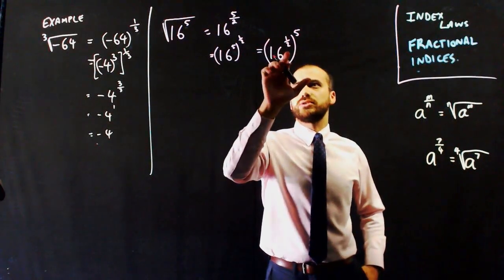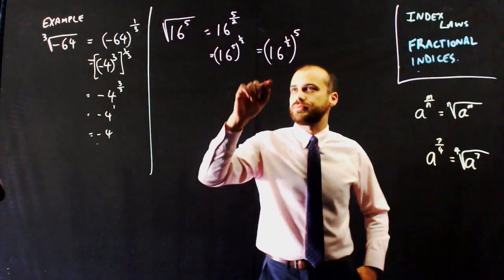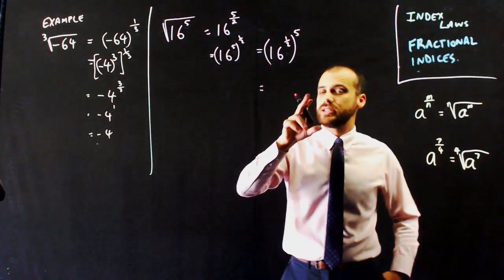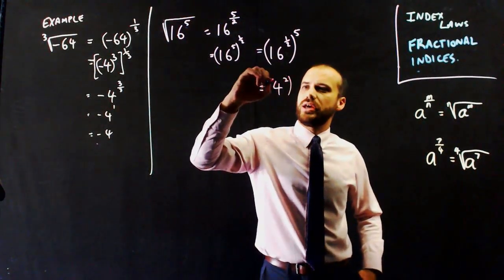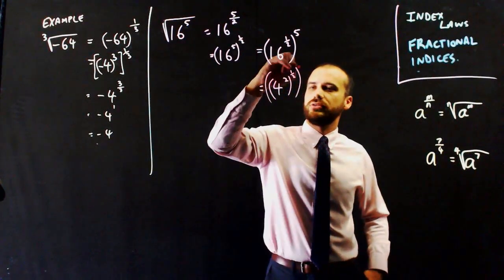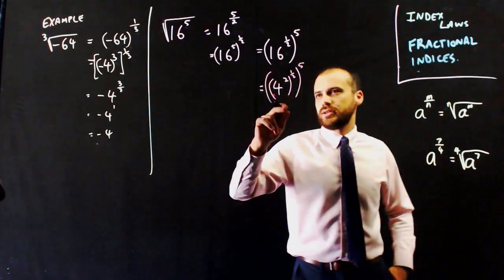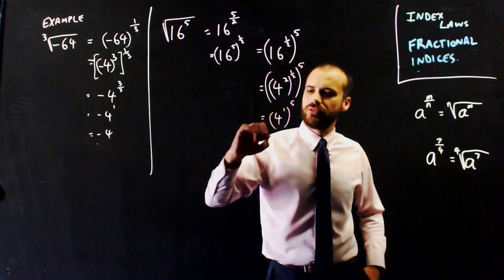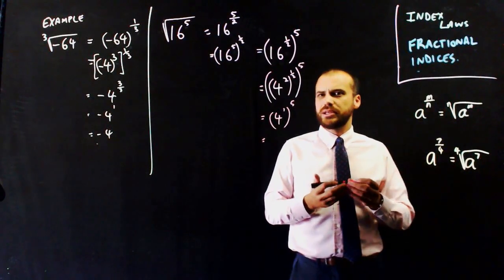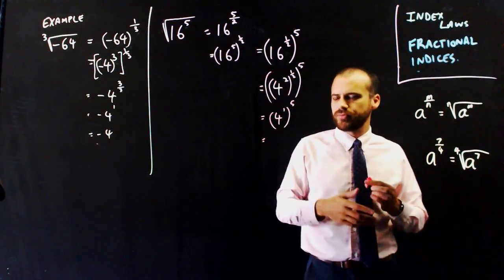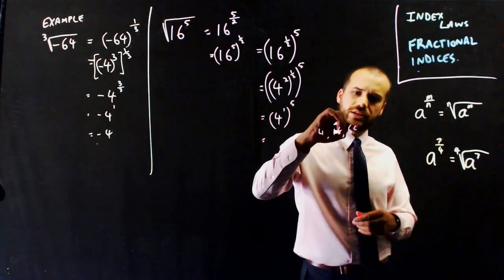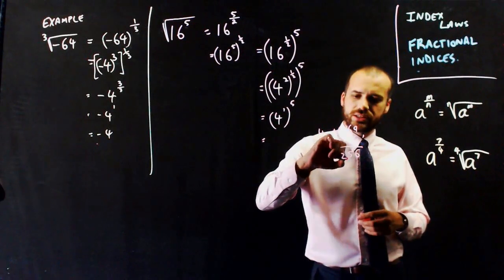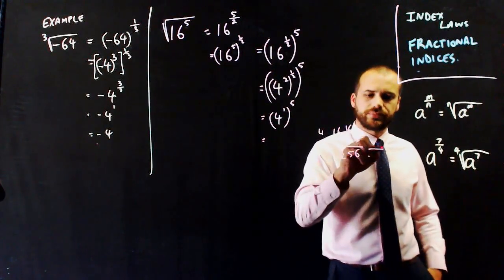Looking at 16 to the power of 1 half: I can say 16 is the same as 4 squared. So now I've got 4 squared, to the power of 1 half, to the power of 5. That's 4 to the power of 2 times 1 half, which is 2 over 2, which is 1. So that's 4 to the power of 1, to the power of 5, which is 4 to the 5. That's 4 times 4 times 4 times 4 times 4: 4, 16, 64, 256, 1024. So the answer is 1024.